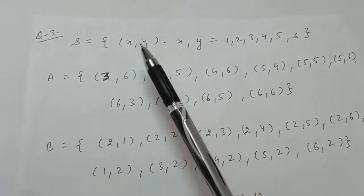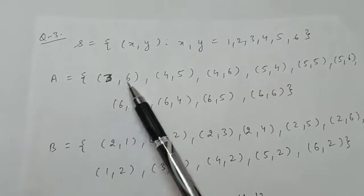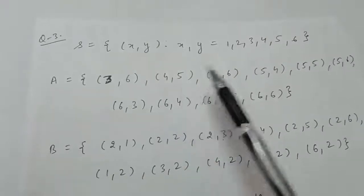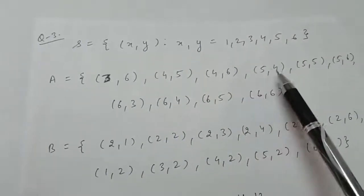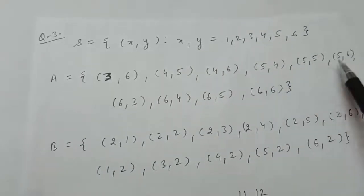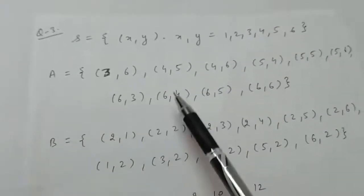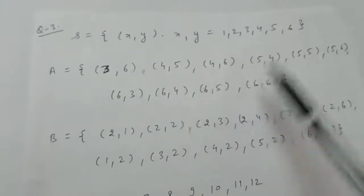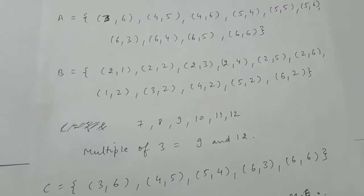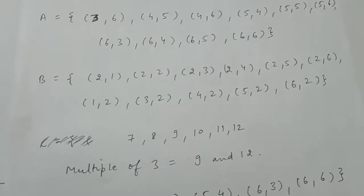With 3 and 6 the sum is 9, which is greater than 8. With 4 we can take 5 and 6. With 5 we can take 4, 5, or 6, giving sums 9, 10, and 11. With 6 we have (6,3), (6,4), (6,5), and (6,6). These are all the ordered pairs whose sum is greater than 8.